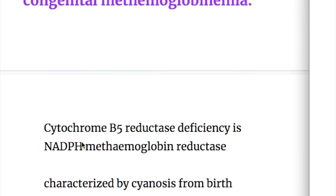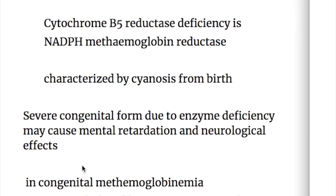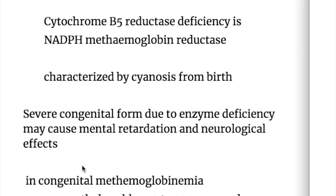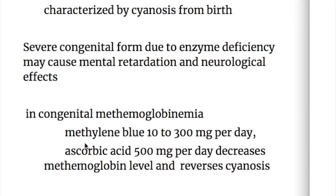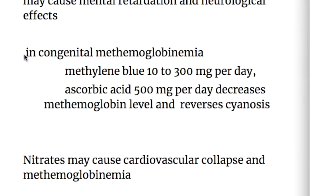Congenital methemoglobinemia occurs due to deficiency of cytochrome B5 reductase and NADPH methemoglobin reductase. It is characterized by cyanosis from birth. The severe congenital form due to enzyme deficiency may cause mental retardation and neurological effects. Treatment consists of methylene blue 10 to 300 mg per day and ascorbic acid (vitamin C) 500 mg per day, which decreases the methemoglobin level and reverses cyanosis.